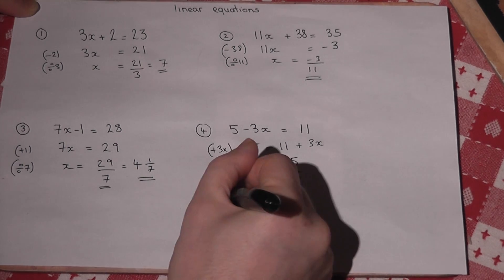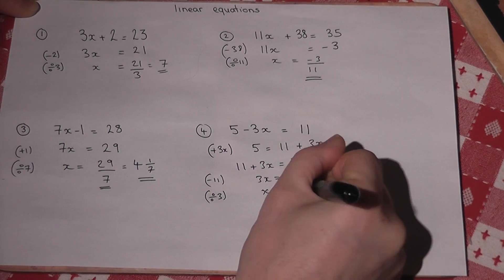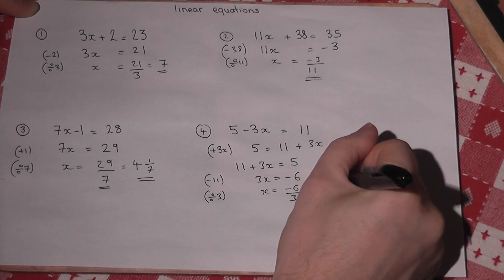I then divide by 3. So x equals minus 6 divided by 3, which is actually minus 2.